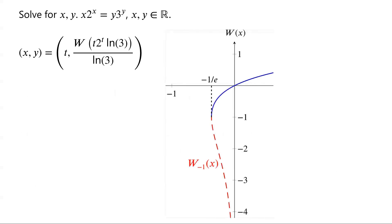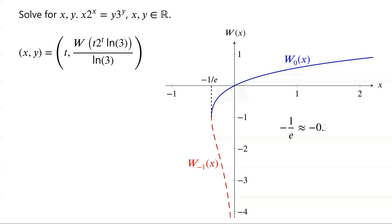Why? The graph of the Lambert W function shows its domain is the interval [−1/e, ∞). Since −1/e is approximately −0.368, and −0.549 is less than −0.368, W(−0.549) has no real values. We also know that the real-valued Lambert W function is not a single bijective function — it is a multi-valued relation. To make it a standard function, we split it into branches: the W0 branch and the W(−1) branch. So for a specific value of t, the Lambert W function might have two different values.